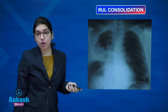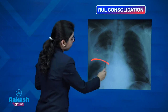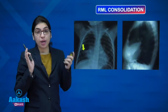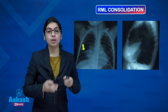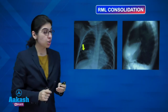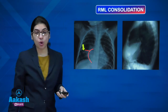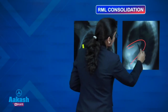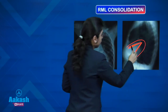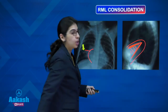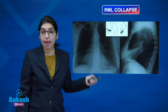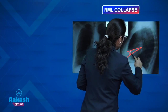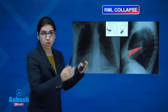For right upper lobe consolidation, the upper lobe is bounded inferiorly by the horizontal fissure. Right middle lobe lies between the horizontal and oblique fissures — opacity obscuring the right heart border indicates right middle lobe. On lateral X-ray, a triangular opacity between the horizontal and oblique fissures is right middle lobe consolidation. Right middle lobe collapse appears similarly triangular but with reduced volume as fissures are pulled towards it.